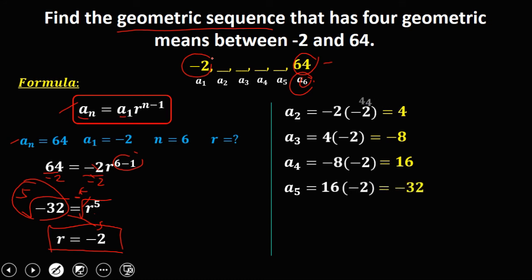So these are the 4 geometric means between negative 2 and 64.